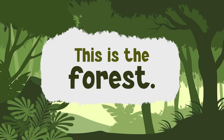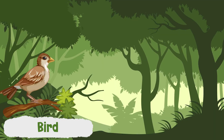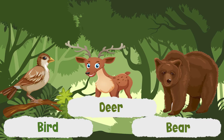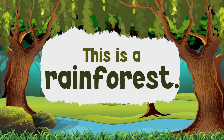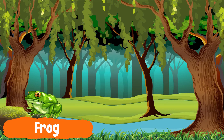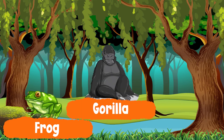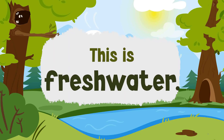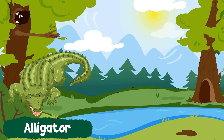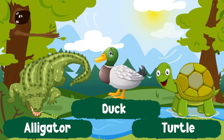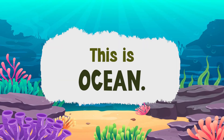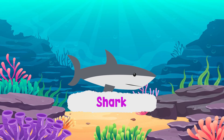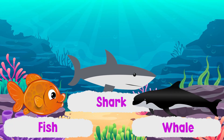This is a forest. Birds, bears, and deer live in the forest. This is a rainforest. Frogs, gorillas, and iguanas live in the rainforest. This is freshwater. Alligators, ducks, and turtles live in freshwater habitats. This is the ocean. Sharks, fishes, and whales live in the ocean.